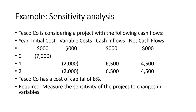Example: Sensitivity Analysis. Tesco Company is considering a project with the following cash flows. Year Zero: Initial Cost negative $7,000. Year One: Variable Cost negative $2,000, Cash Inflows $6,500, Net Cash Flow $4,500.